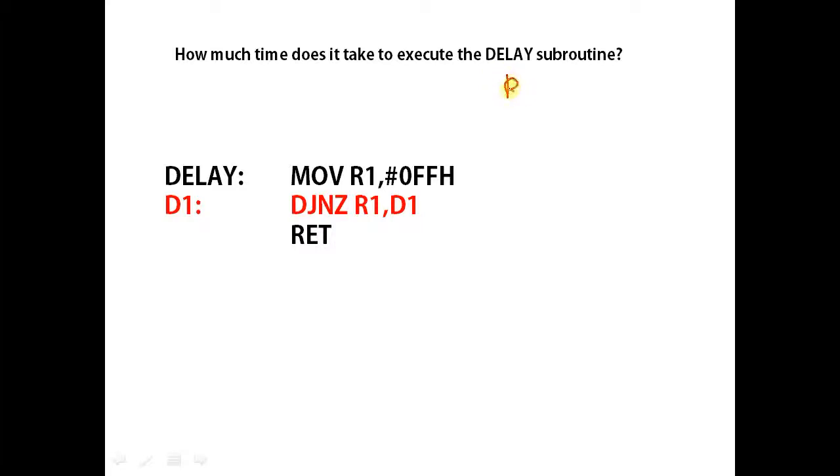The value of R1 is 255. After decrement, its value becomes 254. Since R1 is not equal to zero, the system jumps to D1.